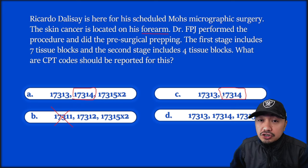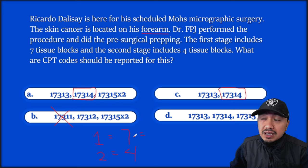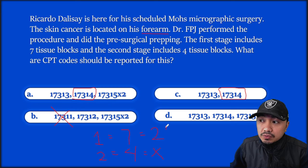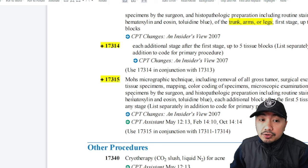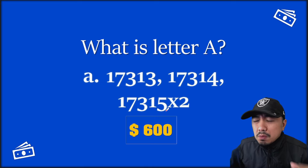Now check the tissue blocks per stage. First stage: seven tissue blocks. The base code covers up to five tissue blocks, so 7 minus 5 = 2 excess blocks. Second stage: four tissue blocks — this does not exceed five, so no add-on needed there. For the excess tissue blocks, use code 17315, multiplied by two (for the two excess blocks in the first stage). Final codes: 17313 + 17314 + 17315 × 2. Congratulations for your $600.